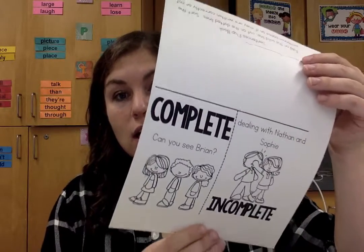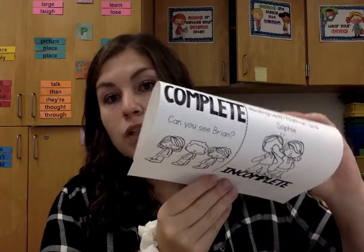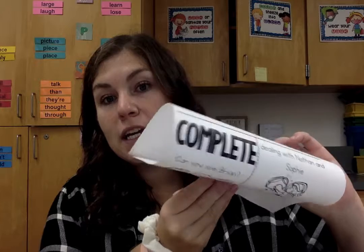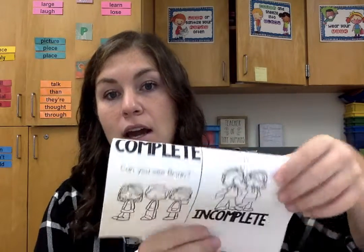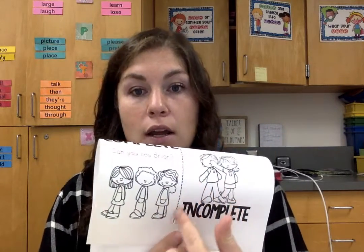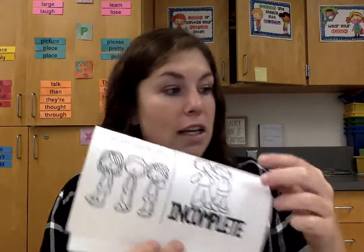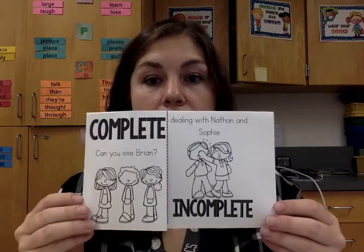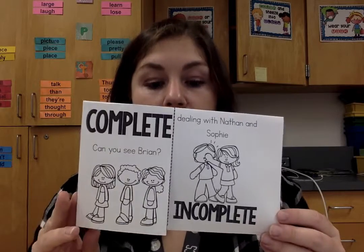So what you are going to do with this sheet is you are going to fold it in half on this black line, and then you are going to cut right down this line here. So after you do that, it'll look like this — it'll have this on the front and this on the back.